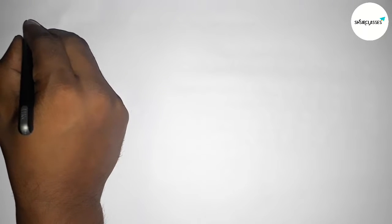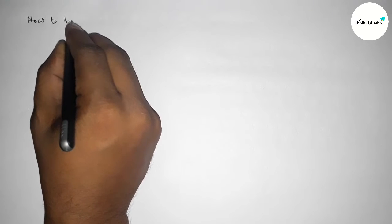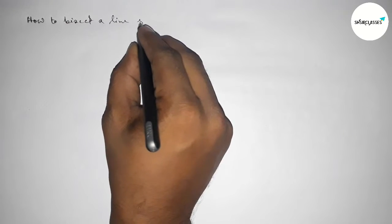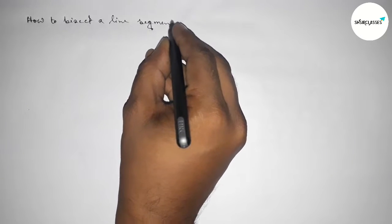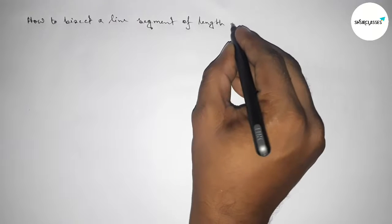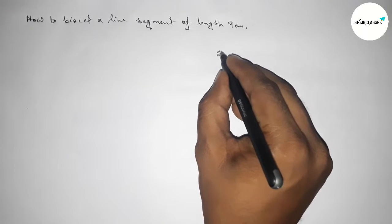Hi everyone, welcome to SI Share Classes. Today in this video, we're discussing how to bisect a line segment of length 9 centimeters using a compass. Let's start the video. First of all, leaving some space here to write the steps of construction.